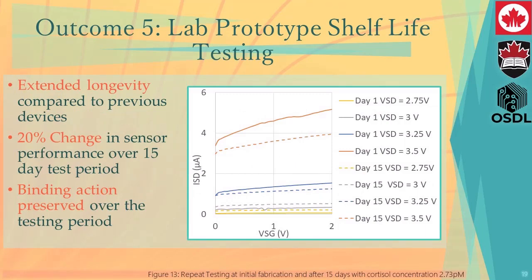Our outcome 5 investigates the shelf life of our lab prototype. We observed extended longevity compared to our previous devices, where transistor action was often lost after the first two days. Instead, we observed only a 20% change in sensor performance over our 15-day test period. This is also significant compared to literature electrolyte-gated devices, which can show up to a 60% reduction in output characteristics over the first 11 hours. We also observed preserved binding action over our testing period due to the reversible denaturation of aptamers.